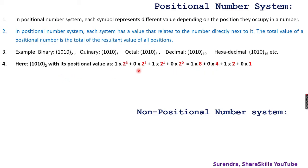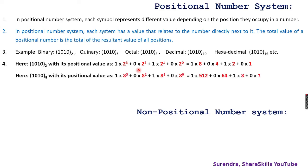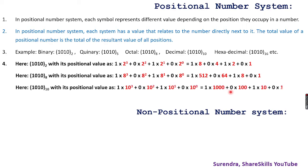For octal numbers, the positional values work the same way — powers 0, 1, 2, 3 with the base. For decimal, we say ones, tens, hundreds, thousands — these are the calculated values of powers on base 10: 10 power 0 = 1, 10 power 1 = 10, 10 power 2 = 100. These are the place values, which is why they are called a positional number system.